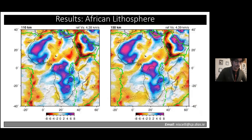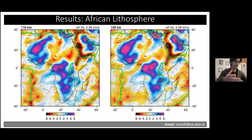Jumping straight into our results: we are looking at S-wave velocity slices in the lithosphere. S-wave velocity is a proxy for temperature — faster velocities, shown in blue and purple colors, indicate colder lithosphere or mantle, whereas lower velocities, reds and yellows, indicate hotter temperatures.